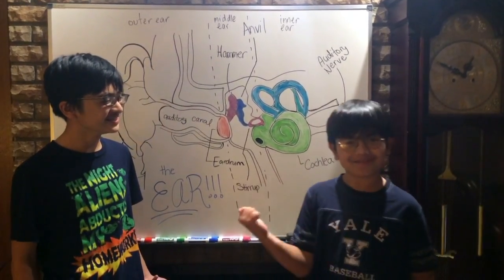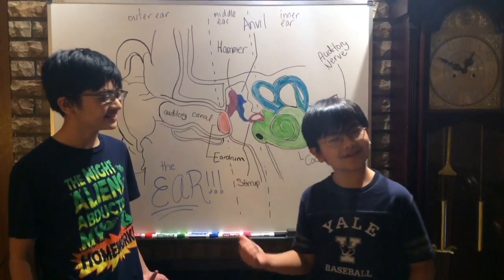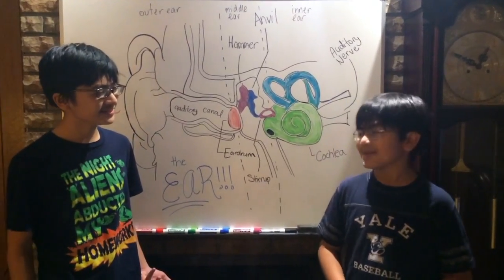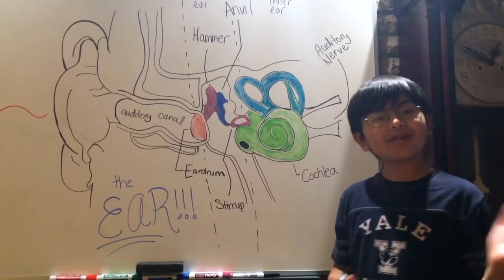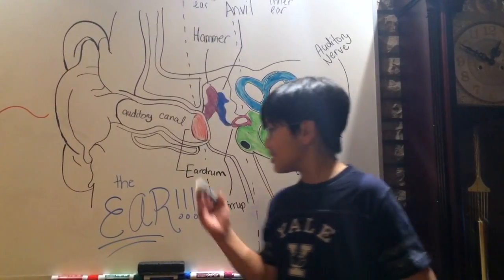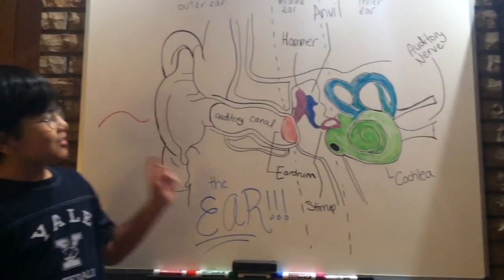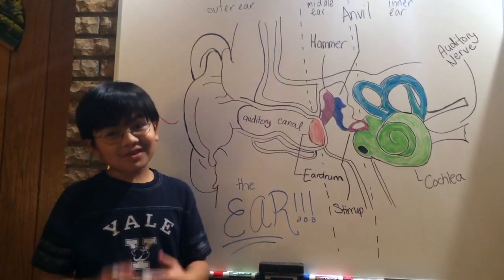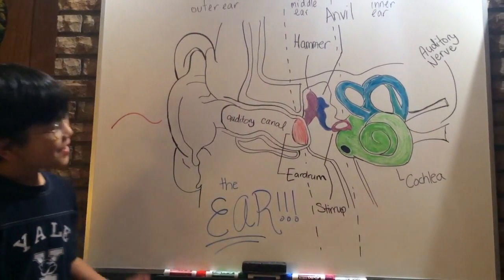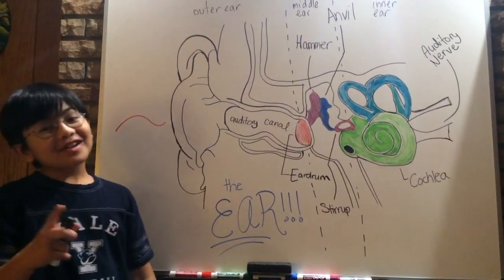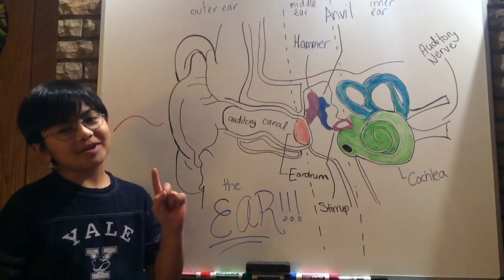This kid's deaf. There must be something wrong with his cochlea. Okay, look at this. This is your ear. Pretty gross, right? Wrong. You see, ears are actually cool, like bow ties.